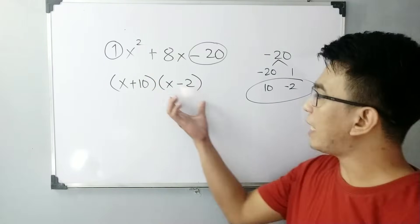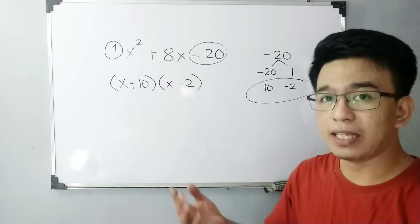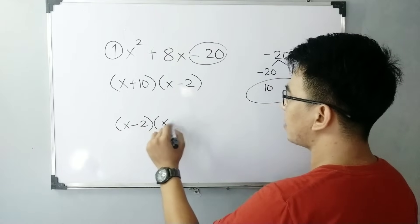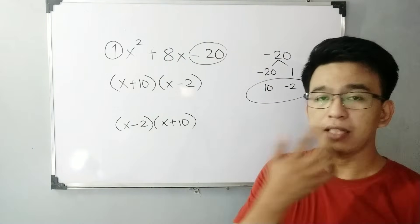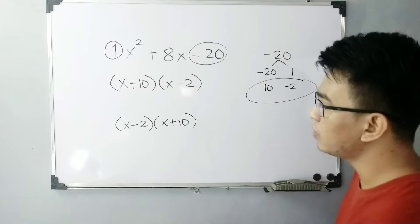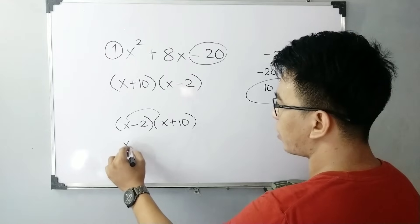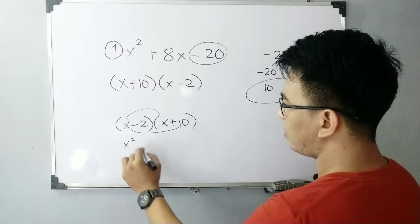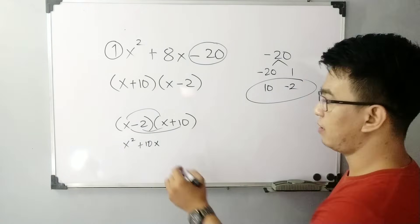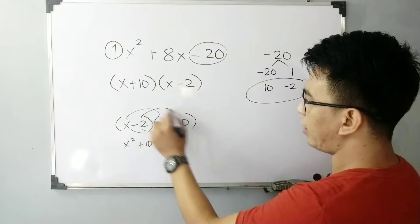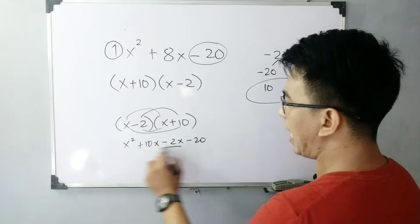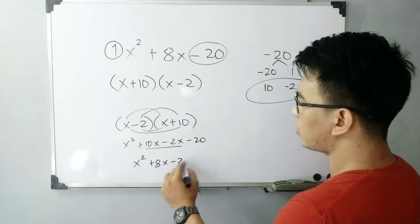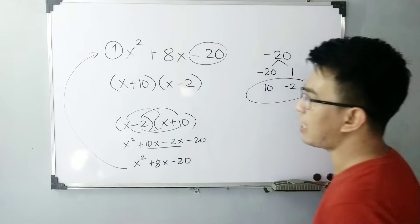Ang tanong po dito, pwede po ba mag-interchange yung pwesto ng factors natin? Yes, pwede-pwede. Let's say for example, ito ay x minus 2 times x plus 10. So kung gusto mong patunayan natin if they are the same, we can use the FOIL method. x times x is x squared; x times 10 is plus 10x; negative 2 times x gives you negative 2x; negative 2 times 10 is negative 20. Adding these up, this will give you x squared plus 8x minus 20. As you can see, same lang ng ating given trinomial.